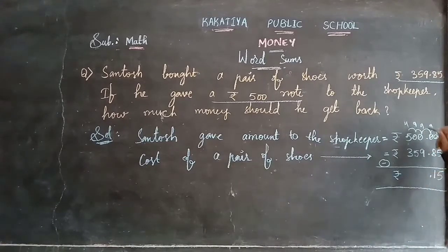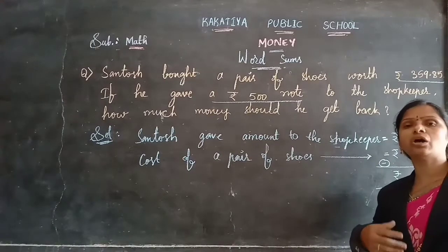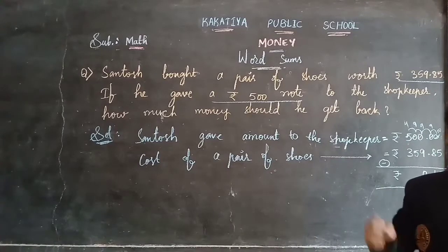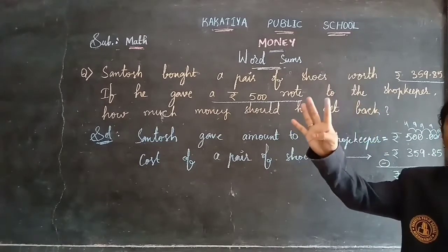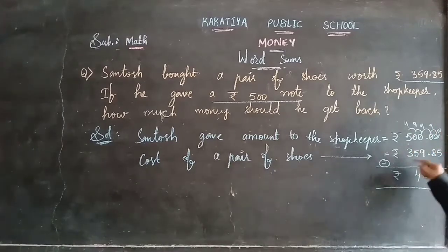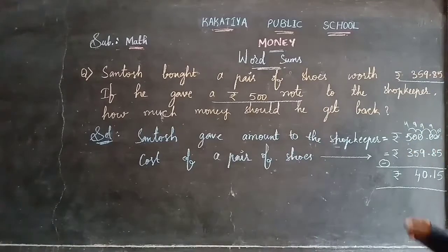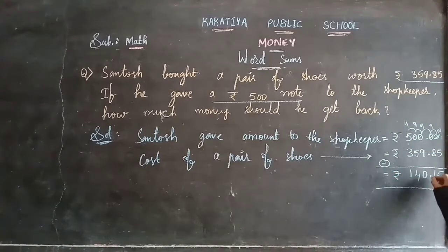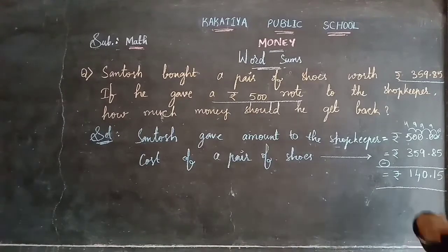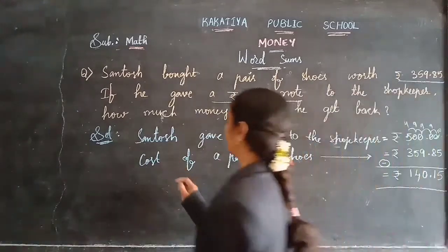Next: 9 minus 9 — same numbers give 0. Then 9 minus 5: counting from 5 to 9 requires 4 steps, so we write 4. Then 4 minus 3: counting from 3 to 4 requires 1 step, so we write 1. So the amount Santosh gets back from the shopkeeper is 140 rupees 15 paise.